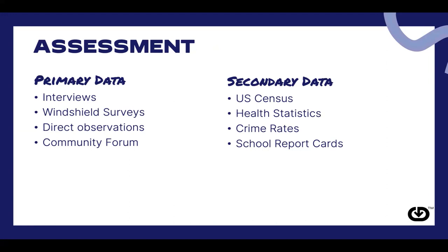When doing a community assessment to understand the health needs of a community, you'll gather data from both primary and secondary sources. Primary sources are things you hear directly from people: direct interviews, direct observations, community forums, and windshield surveys. Windshield surveys are exactly what they sound like — you drive around and look out the windshield to observe the community. How many healthcare organizations are in the area? Do they have a pharmacy? Is there a liquor store on every corner? Is there graffiti? What do the buildings look like? Do they have access to healthy food or just convenience stores on the corner?